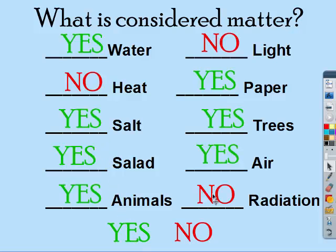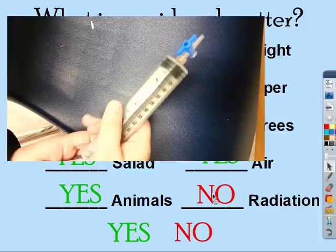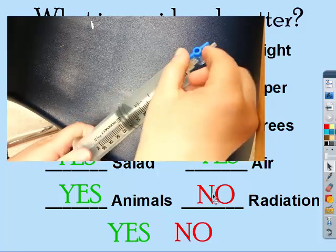This is what you should have gotten. Water, salt, salad, animals, paper, trees, and air all have mass and take up space. Heat, light, and radiation are all forms of energy and do not take up space or have mass. The one people miss the most is air, but you can weigh it and it does take up space.